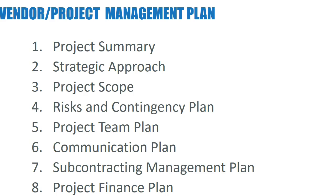What I do in my biotech, pharma, and medical device role is put together a vendor management plan or project management plan where I summarize the project and a strategic approach — for example, Group A monitoring in the Baltics, Group B monitoring somewhere else — with a communication plan so they all talk to each other and are not kept isolated. The project scope: what is the size of it, and if we're looking at an adaptive design, what is the maximum and minimum project scope? And what are we going to do to manage all the components?